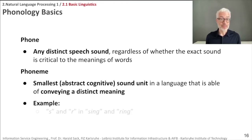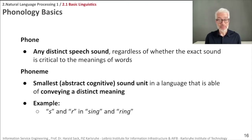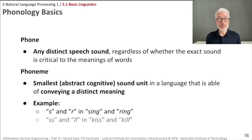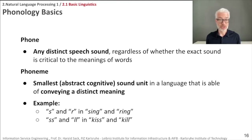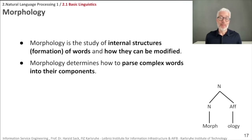For example, here we have the phonemes 's' and 'r' at the beginning of a word — they make a difference if you say 'sing' or 'ring'. And looking at phonemes at the end of a word, for 'kiss' and 'kill', it makes a huge difference whether you use the double-s or the double-l, which are two letters but produce specific sounds. Therefore these are phonemes — the very smallest units within a language.